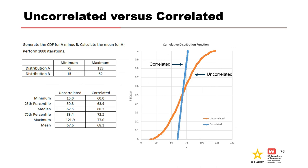Circling back to the earlier exercise, this slide shows how the CDF would change if we correlated distributions A and B. The distributions were uncorrelated for the orange CDF and correlated for the blue CDF. To correlate distributions in Excel, use the same random number to sample distributions A and B at a given iteration — if it samples high for one, it will sample high for the other. Correlation mostly reduces the variance in the output distribution because it eliminates the chance of sampling high from A and low from B simultaneously. The mean and median will be comparable whether the distributions are correlated or not.